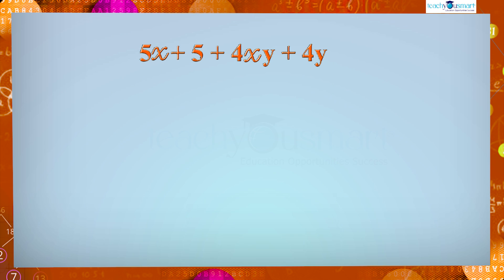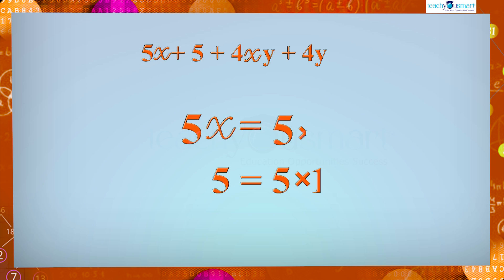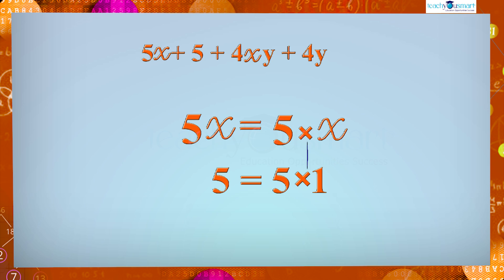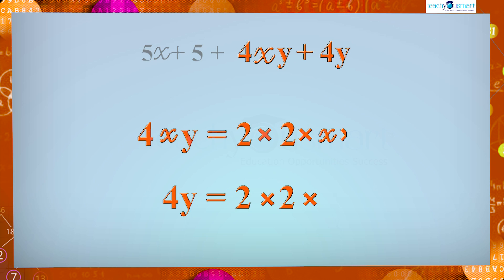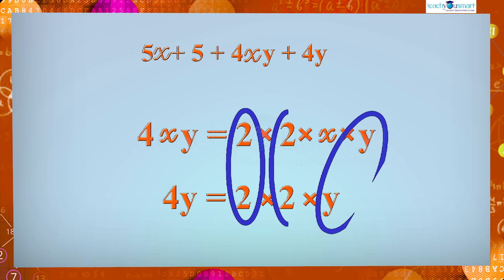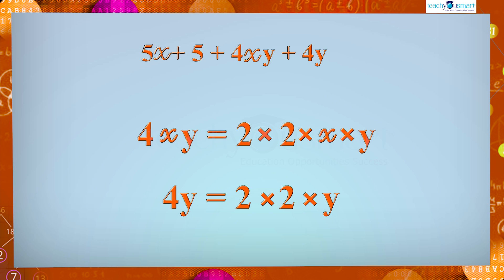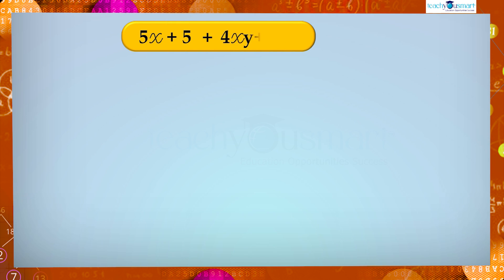But in the first two terms, 5x + 5, there is a common factor which is 5. And in the next two terms, 4xy and 4y, 4 and y are common factors. So let's take these four terms as two groups: (5x + 5) and (4xy + 4y).